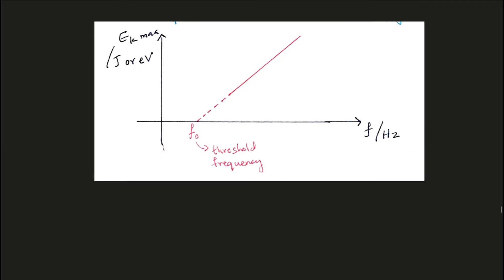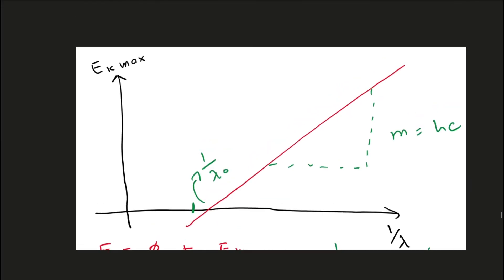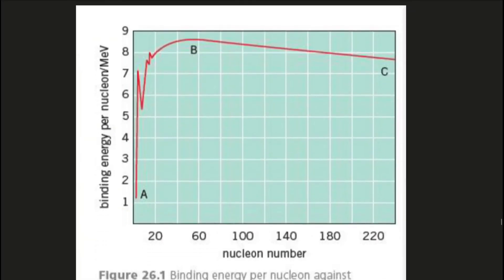This graph is from quantum physics and is related to photoelectric emission. It shows the relationship between the maximum kinetic energy of the photoelectrons versus the frequency of the arriving photons. The x-intercept of the graph gives you the threshold frequency, and the gradient of this graph is equal to Planck's constant. The next graph is similar but has one over lambda on the x-axis instead of frequency. The graph has the same shape, however the gradient is equal to Planck's constant multiplied by the speed of light, and the x-intercept is equal to one over the threshold wavelength.